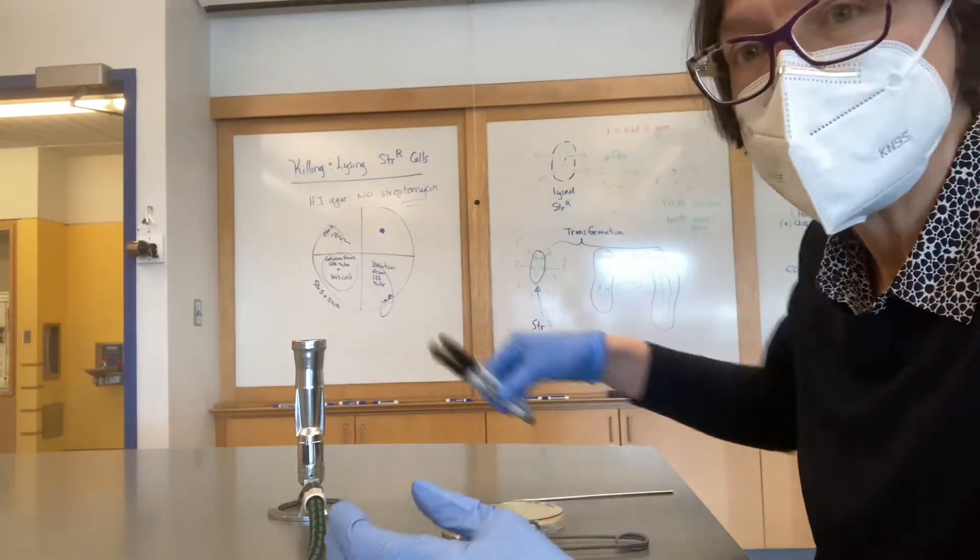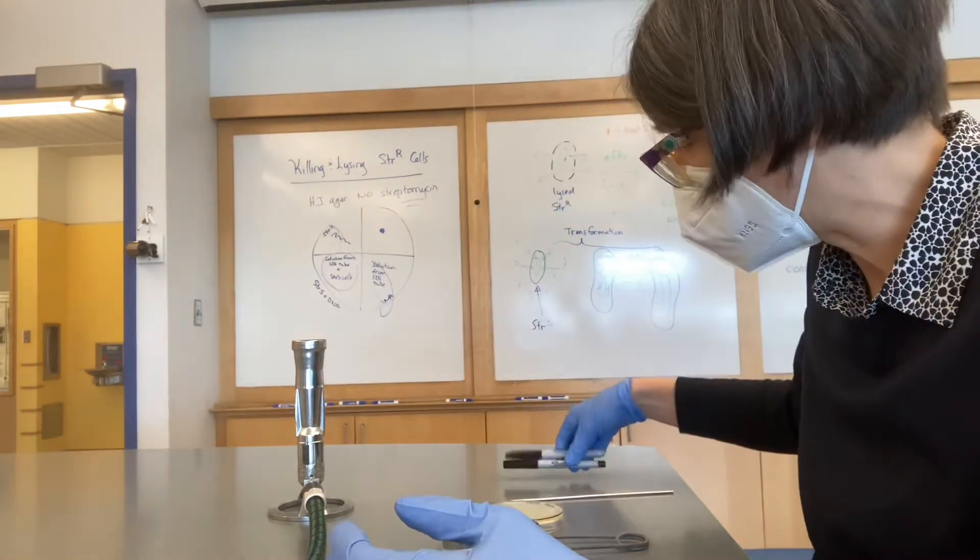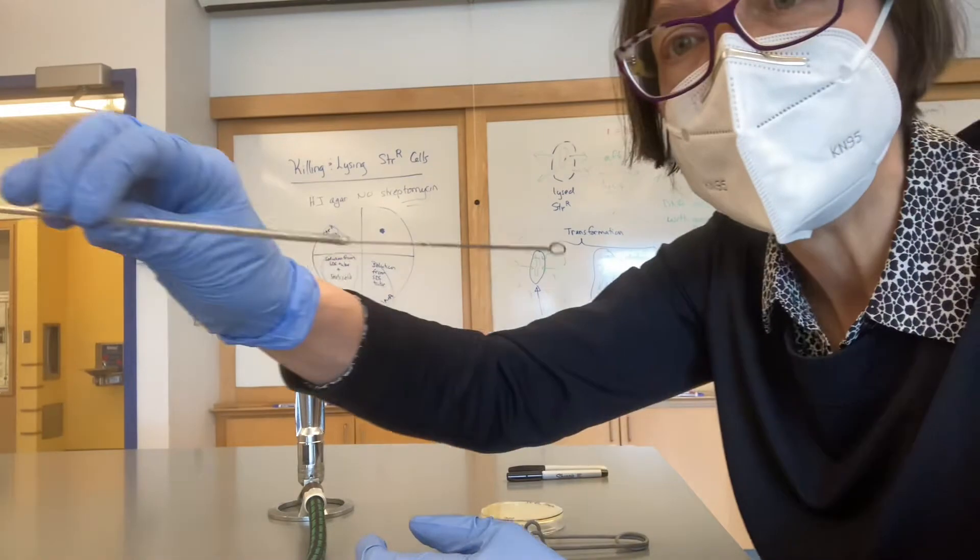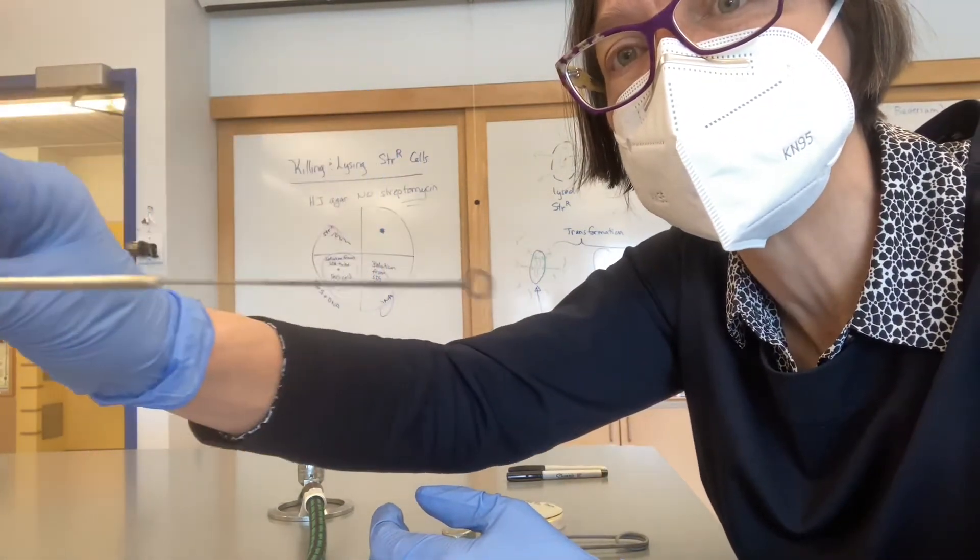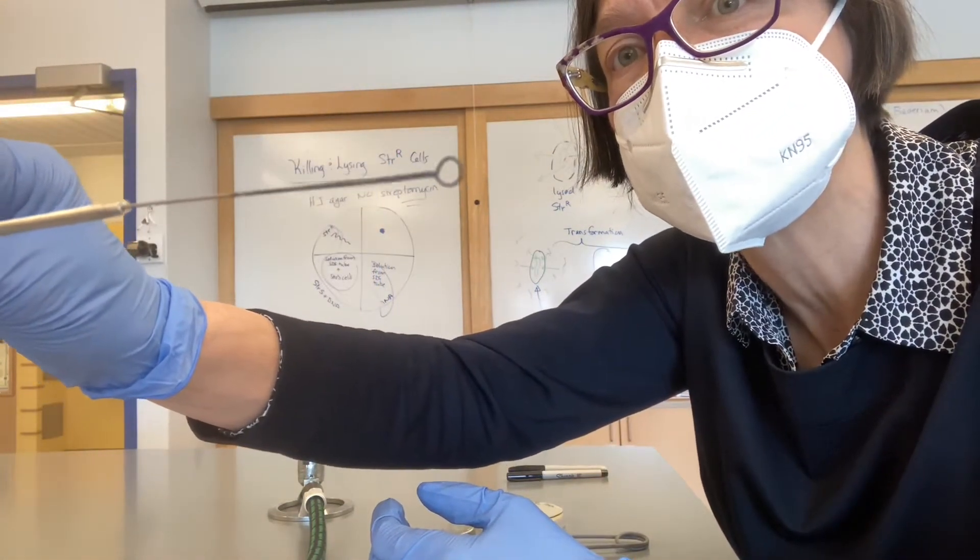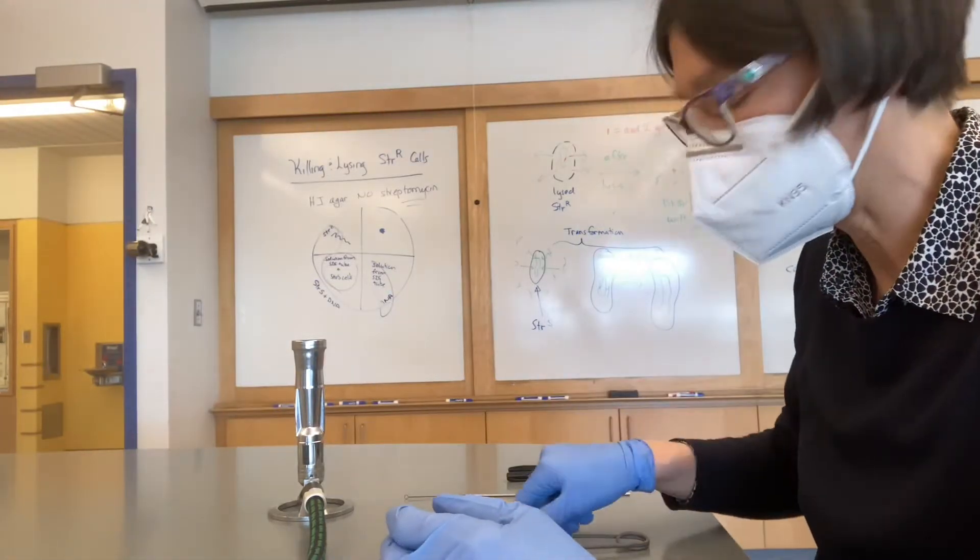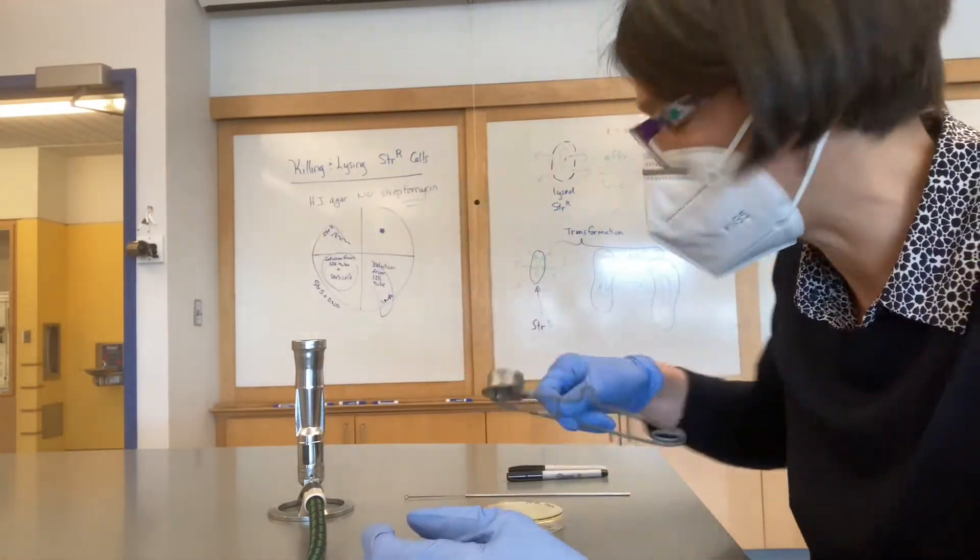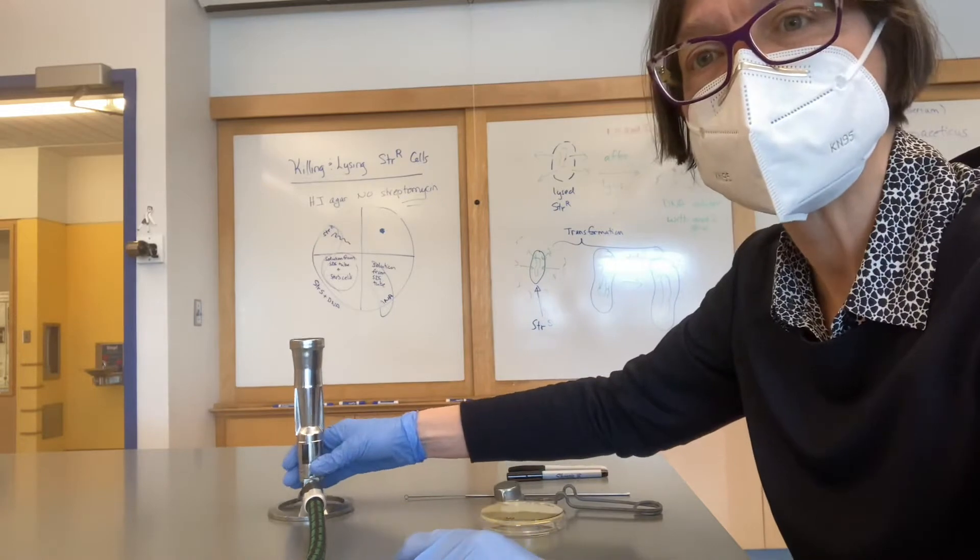We have Sharpie markers for labeling. We have an inoculating loop. Notice the circle on the end. And we have a striker to light the Bunsen burner, and a Bunsen burner.